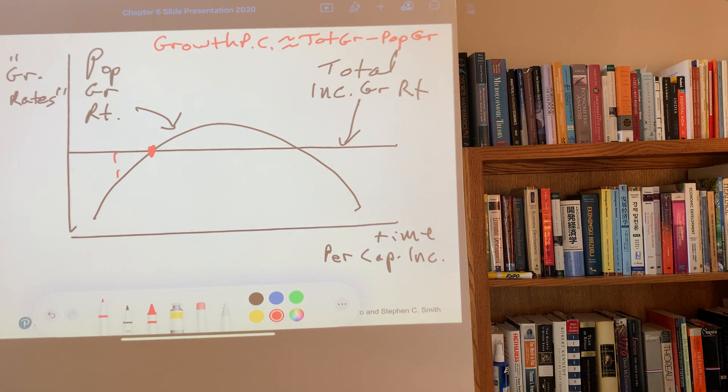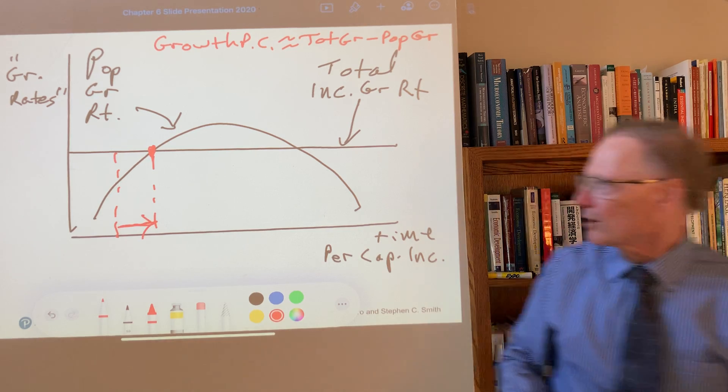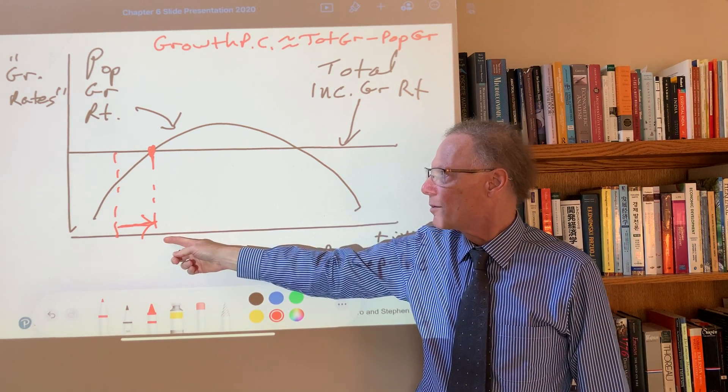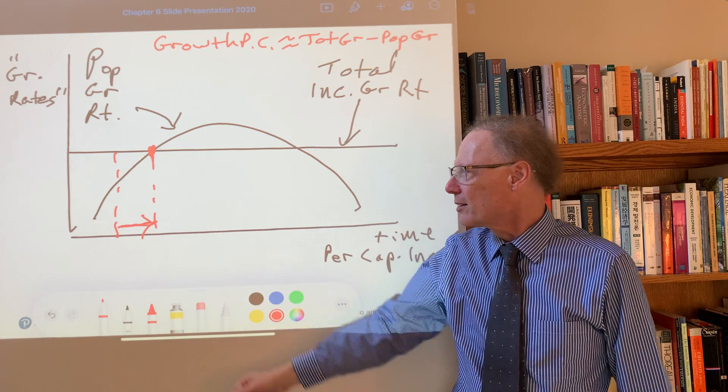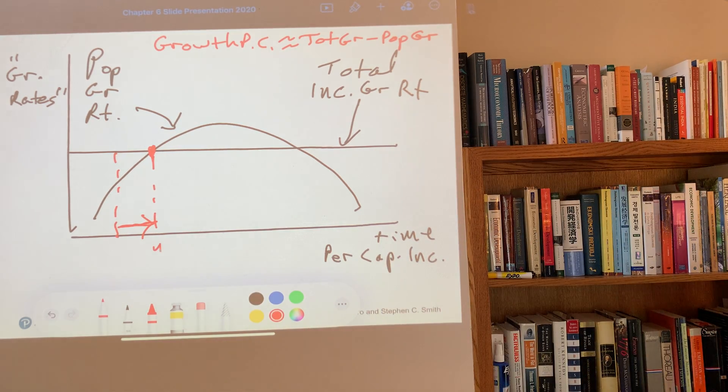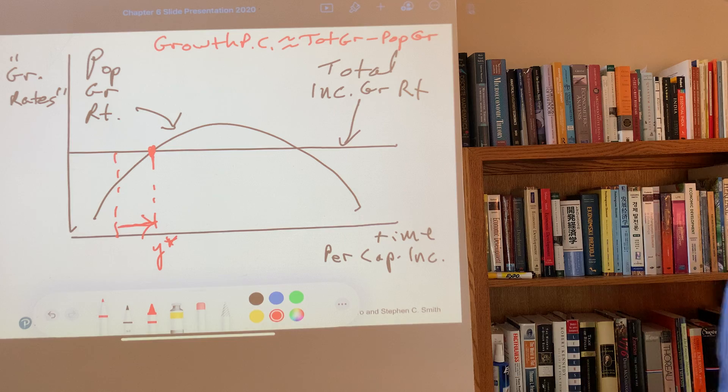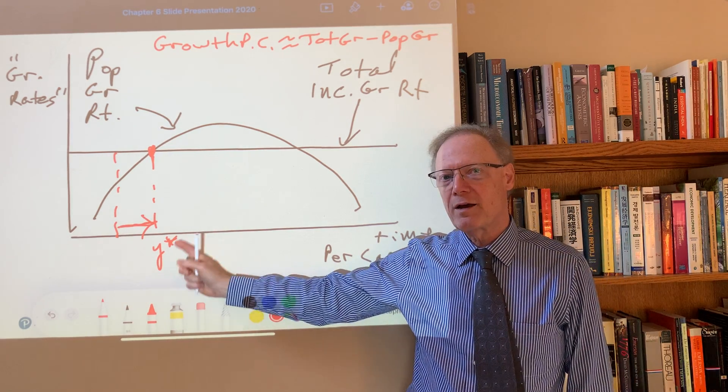Total income growing faster than population, so growth per capita has to be positive. So if we start, say here, we are moving in this direction of our equilibrium per capita income. We'll just call it something Y star.